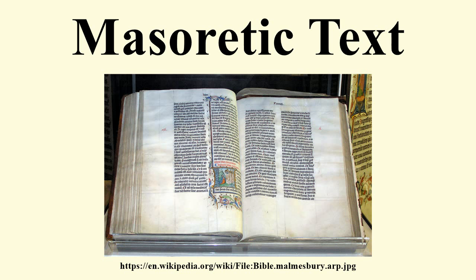Origin and Transmission: The Talmud states that a standard copy of the Hebrew Bible was kept in the court of the Temple in Jerusalem for the benefit of copyists. There were paid correctors of biblical books among the officers of the Temple. This copy is mentioned in the Letter of Aristeas, in the statements of Philo and in Josephus. A Talmudic story, perhaps referring to an earlier time, relates that three Torah scrolls were found in the Temple court but were at variance with each other, and the differences were resolved by majority decision among the three.